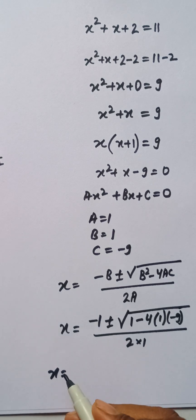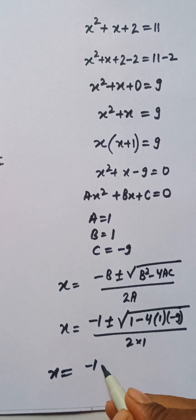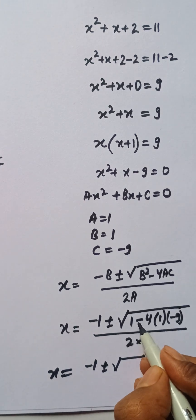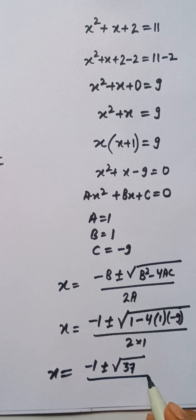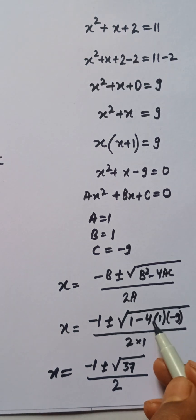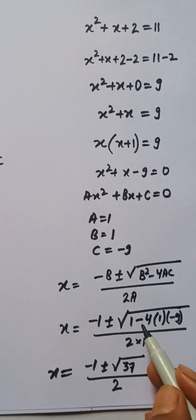So we have x equals minus 1 plus or minus the square root of—here 1 plus 36, that is 37, divided by 2. This is 36 because minus 4 times minus 9 gives us 36, and plus 1 that is 37.